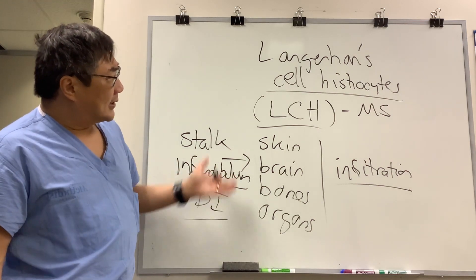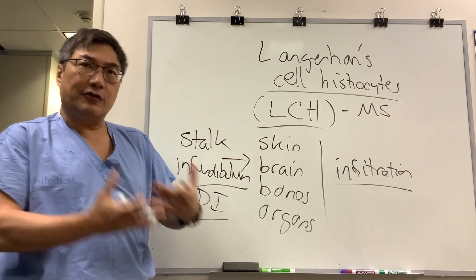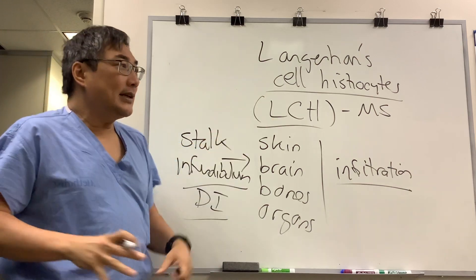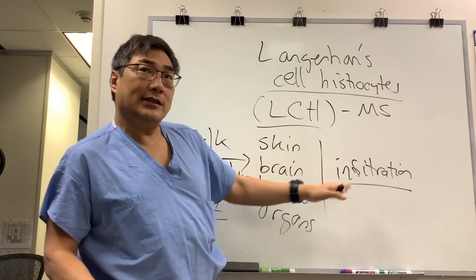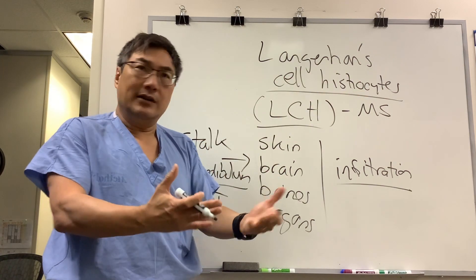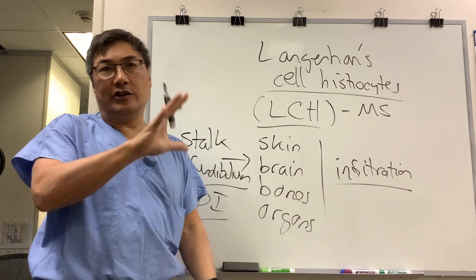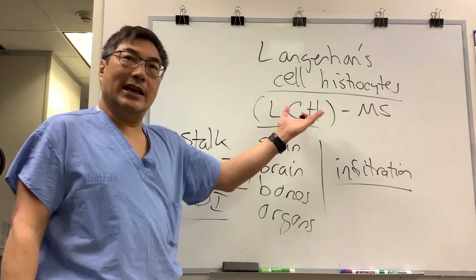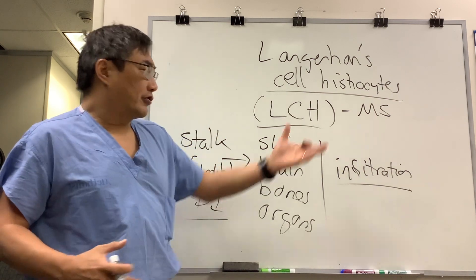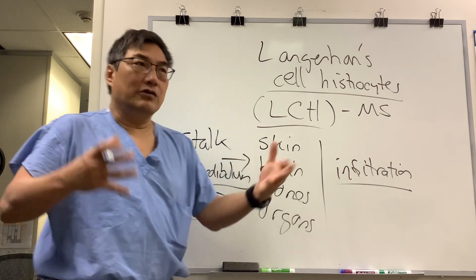Langerhans cell histiocytosis can present as an infiltrated process in any organ system. It's a histiocyte — the target cell, the effector cell. On electron microscopy, you might see the Birbeck granule, which is a very specific and almost pathognomonic finding of Langerhans cell histiocytosis. Like other lymphoproliferative and myeloproliferative disorders, treatments are directed against suppressing the cell — chemotherapy and the usual treatments.